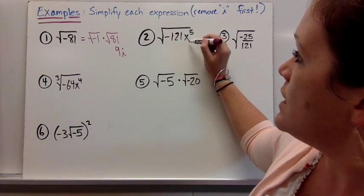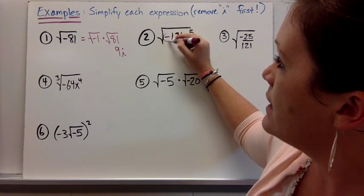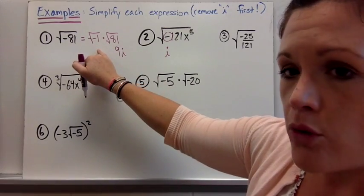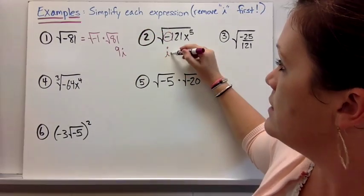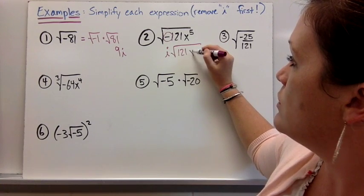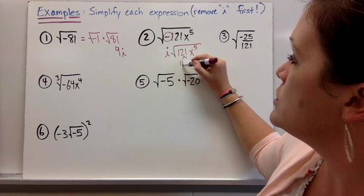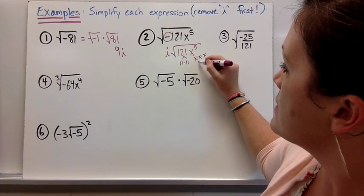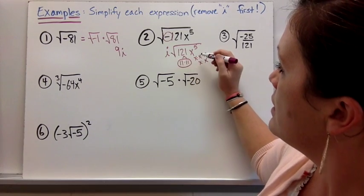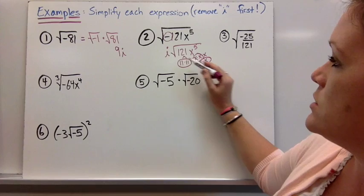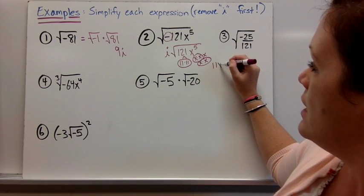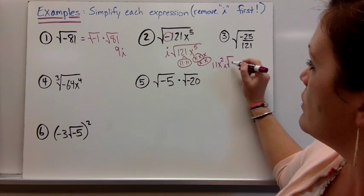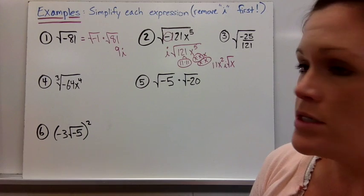For the square root of negative 121x to the fifth: take out the i by removing the negative first. Then work on the square root of 121x⁵. 121 comes from 11 times 11, and there are five x's. I can take out 11, and there are two pairs of x's, so I take out x squared. That gives 11x² with i out front, and the square root of x left over. So the fully simplified answer is 11ix²√x.